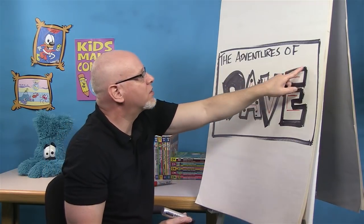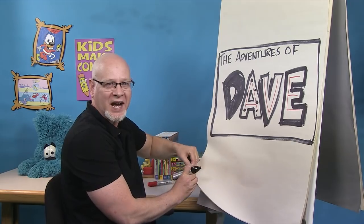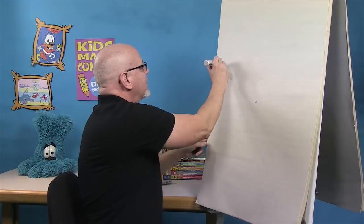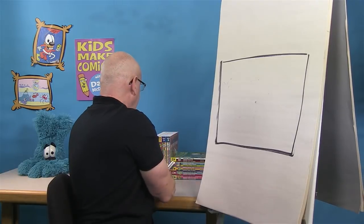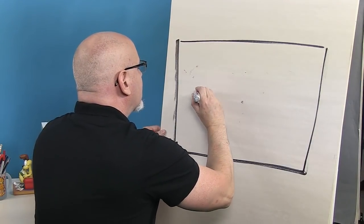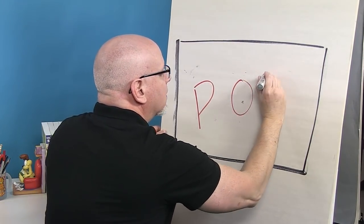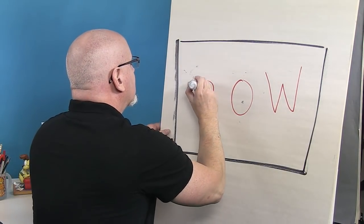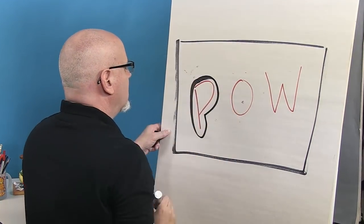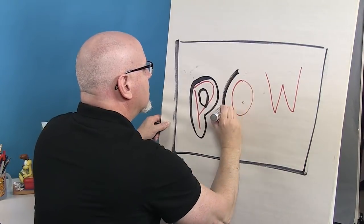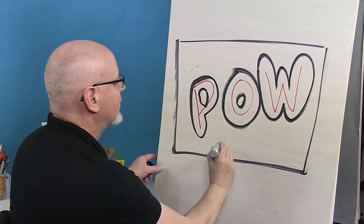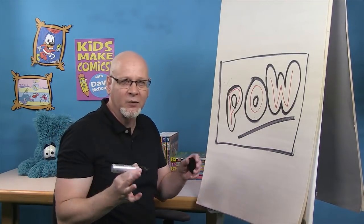These letters are very blocky — you can see the corners are very sharp. But you can also do something called balloon style lettering. Instead of the characters being very sharp cornered, you can have them rounded. Let's write 'pow' — a sound effect word. Not blocky, but balloon-y, so you're going to round off those corners. Balloon-y, blocky, stylize your letters — have fun with them, add some color. And that's how you make some great title and sound effects lettering.